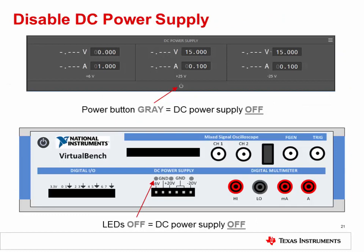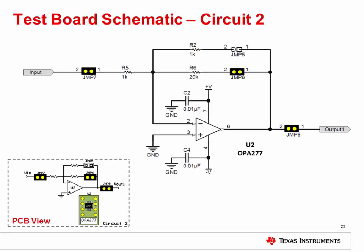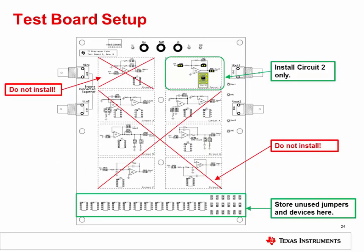Make sure again to disable the DC power supply before setting up the test PCB. In the VirtualBench software, click the Power button in the DC power supply area to turn off power. Check the front panel of the VirtualBench unit to make sure the LEDs are off, and also make sure the function generator is off. To prepare the test board for the measurement, install the jumpers and devices on circuit 2 as shown here. Install JMP6, JMP7, and JMP8, as well as the OPA277 in socket U2. This slide shows the full schematic for circuit 2 on the TI Precision Labs test board. For this measurement, only circuit 2 is used — do not install any jumpers or devices in any other circuits on the PCB. Remove any jumpers or devices from unused circuits and store them in the storage area at the bottom of the test board.